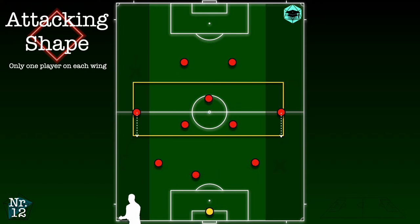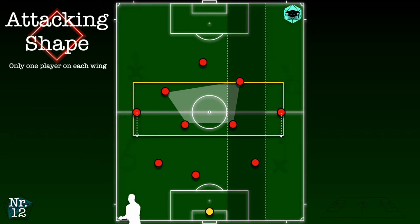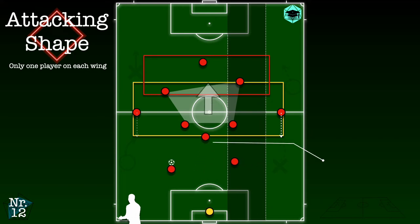The final variation discussed in this video is an interesting box-shaped midfield, which can be created if one of the two forwards can play as a half-space player. This will result in a flexible shape where the team will at times have six players in midfield, but also have players close enough to support the center forward during the transition into attack, thus making it extremely difficult for the opposition to defend.